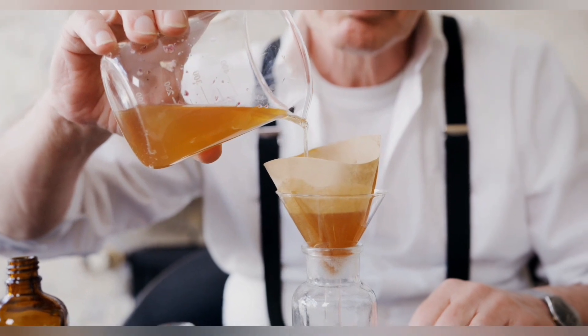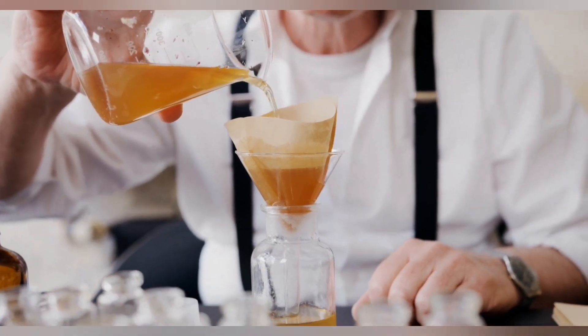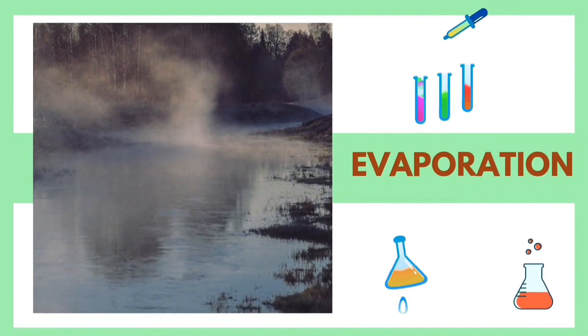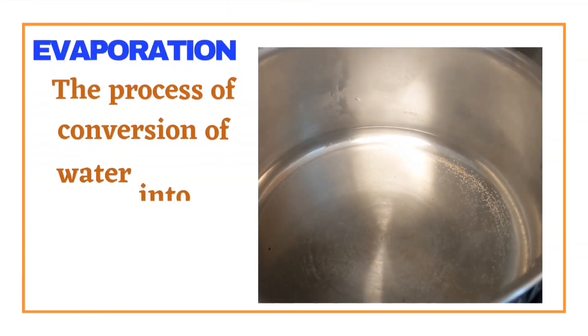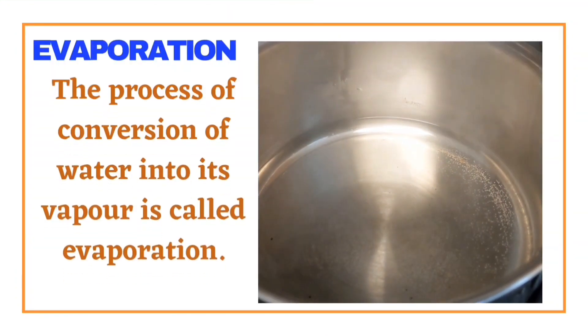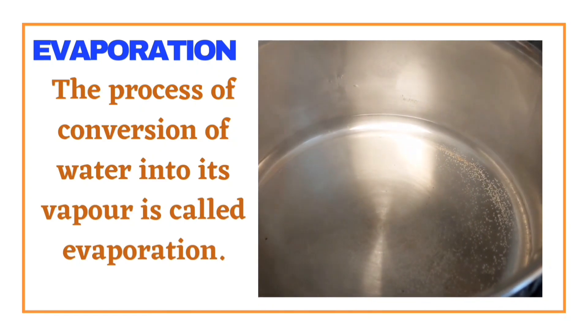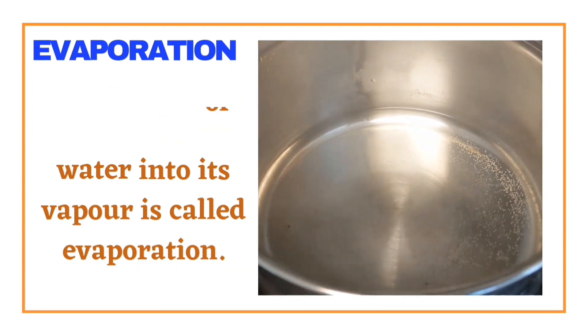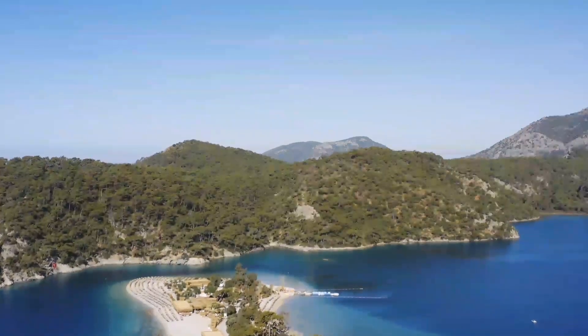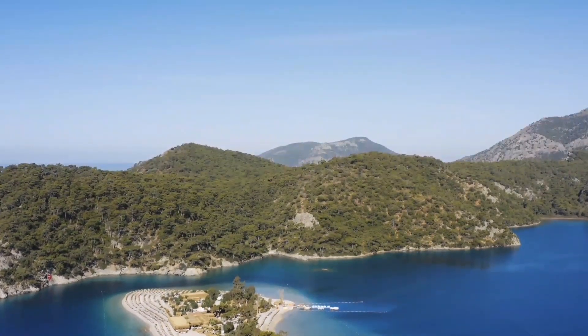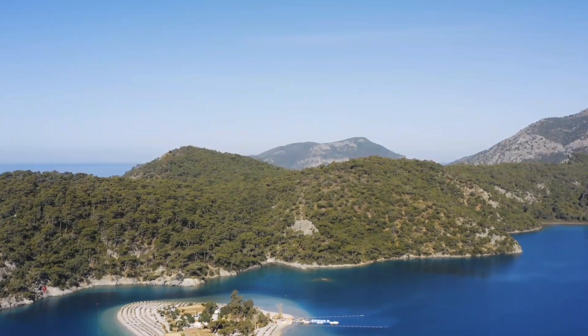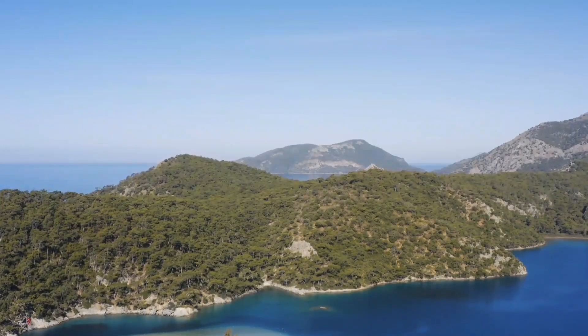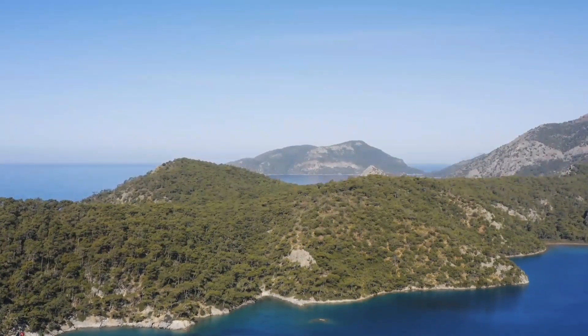The process of conversion of water into water vapor is called evaporation. The process of evaporation takes place continuously wherever water is present. Sea water is saline; it contains many salts. One of these salts is the common salt that we use. Salt is obtained from sea water by the process of evaporation.